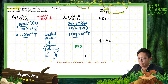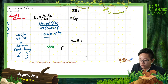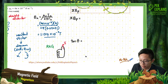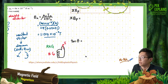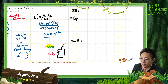Remember for the right-hand grip rule: the thumb represents the current direction, and the four fingers represent the magnetic field direction. Let's use this rule to determine the direction at point P.